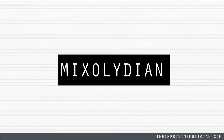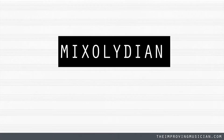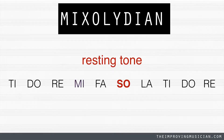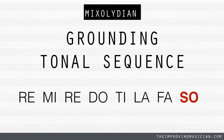Mixolydian Tonality. In Mixolydian, the resting tone is SO. Our grounding tonal sequence is RE MI RE GO TI LA FA SO. This tonality is used in many rock and blues songs, and aspects of this tonality — specifically the b7 chord — are often borrowed and used in major tonality.